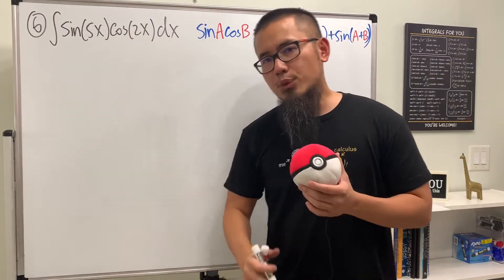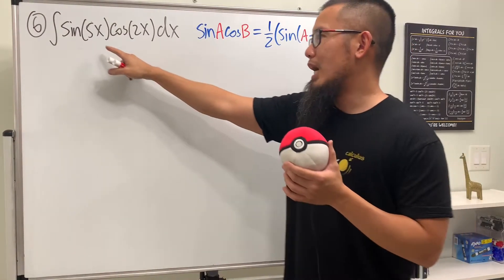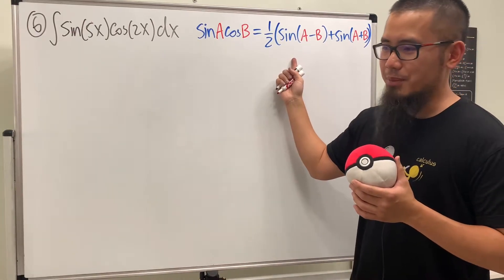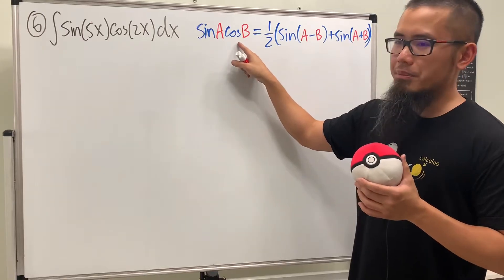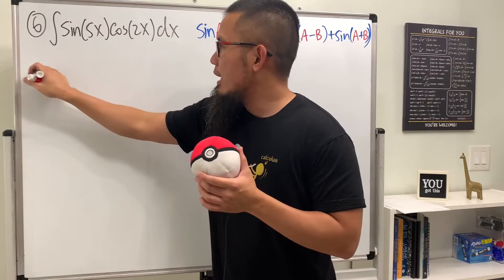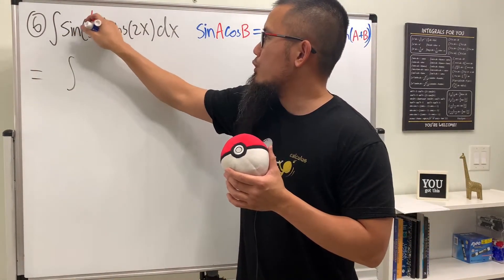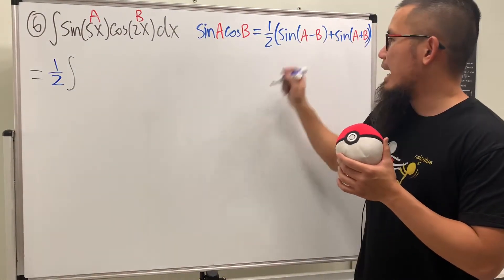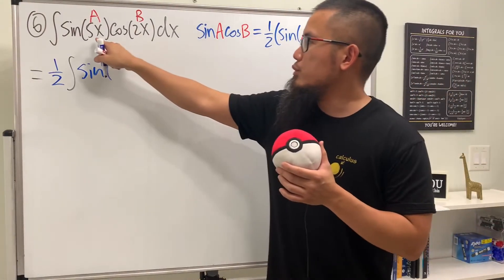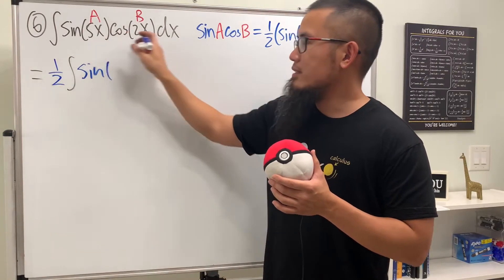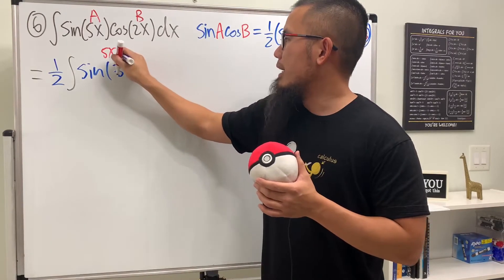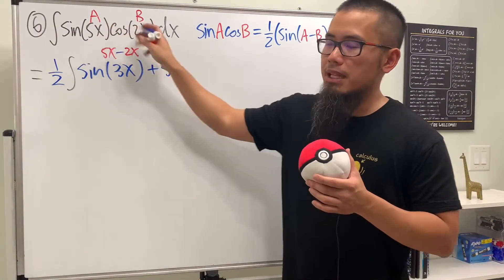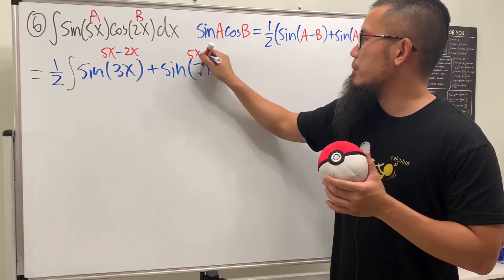For number six we integrate sine of 5x times cosine of 2x. Even though we know the double angle identity for cosine of 2x, with sine of 5x that identity won't help much. However, we have the product-to-sum identity: sine A times cosine B equals one half times sine of A minus B plus sine of A plus B. Using this, we have the one half in front, then sine of 5x minus 2x which is sine of 3x, and then plus sine of 5x plus 2x which is sine of 7x.